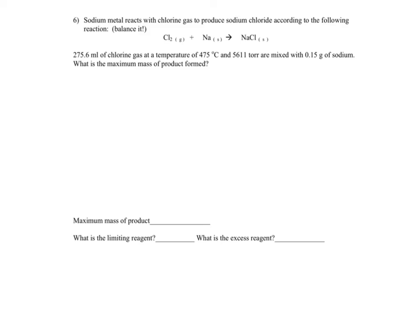Sodium metal reacts with chlorine gas to produce sodium chloride according to the following reaction. We're going to balance that. It tells us we have a certain volume of chlorine gas and a certain mass of sodium metal, so this is a limiting reagent problem. We need to figure out what the limiting reagent is.